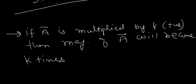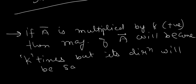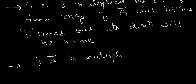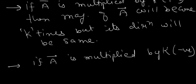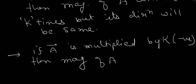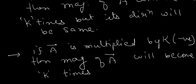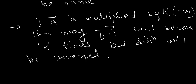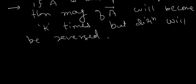If vector A is multiplied by k, the magnitude becomes k times but the direction will be the same. If vector A is multiplied by negative k, the magnitude will become k times but the direction will be reversed.